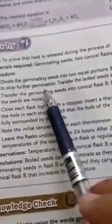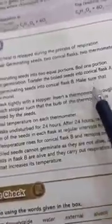Transfer the boiled seeds into conical flask A. Transfer the germinating seeds into conical flask B. Make sure that the seeds are moist. Close the flasks tightly with the stopper and insert a thermometer through the hole so that we can easily take the temperature in each stopper.